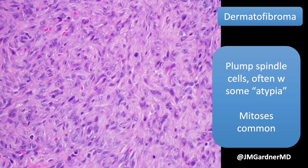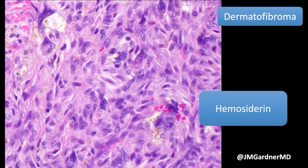Mitoses are common and can be relatively abundant. There's no special count at which you should call it a sarcoma. Rare exceptions of frank sarcomatous transformation in dermatofibroma exist, but they're extremely rare — virtually case-reportable — so if it looks classic for DF, don't worry about mitoses. Hemosiderin is often present in DFs; it can be abundant, and when it's really abundant, people call those hemosiderotic dermatofibromas.